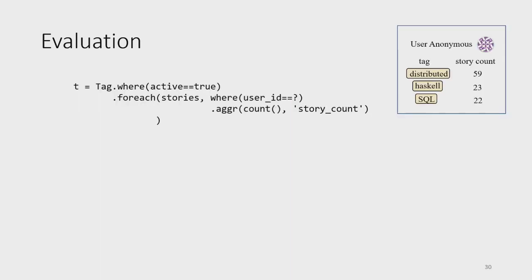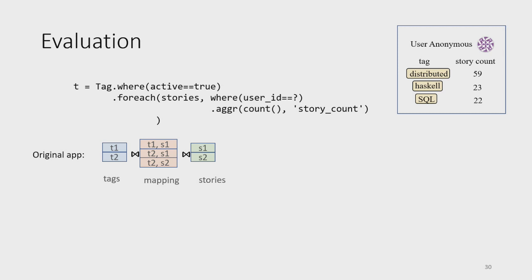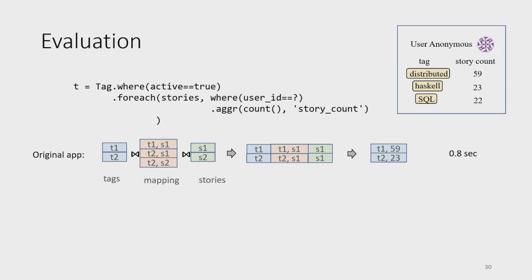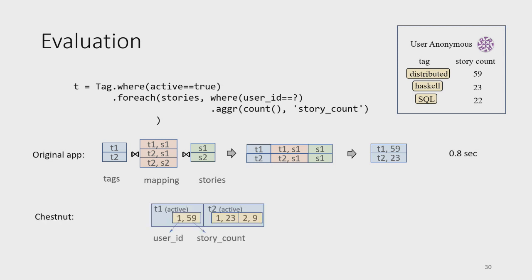Here's an example of what data structures Chestnut finds for an individual query — a query showing a list of tags and counting stories submitted by each user per tag. The original application joins three tables: the tag table, a mapping table, and the story table, then performs a group-by and aggregation, taking 0.8 seconds. Instead, Chestnut stores only active tags with the user ID and story count inside each tag. To answer the query, it only scans the tags and does a binary search on story ID, taking just 7 milliseconds.